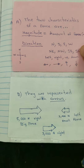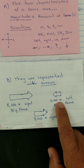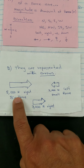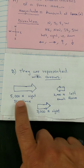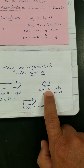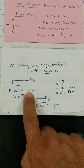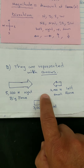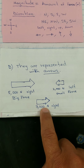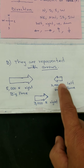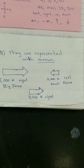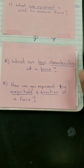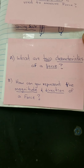The bigger the arrow, the bigger the force; the smaller the arrow, the smaller the force. For example, 5,000 Newtons going to the right versus 2,000 Newtons going to the left — the one in between is also in between in size, so the amount of Newtons is between 5,000 and 2,000, and it's going to the right. Those are examples of how you represent magnitude and direction of a force using arrows.